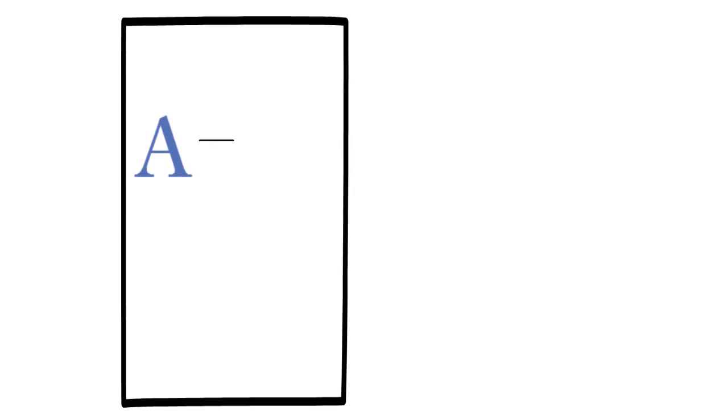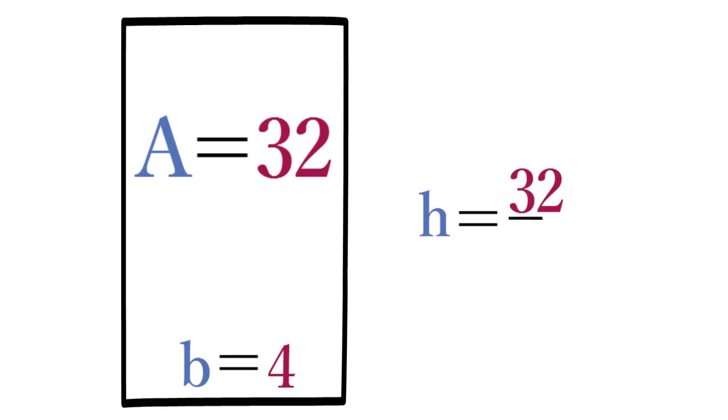Similarly, in this case, the rectangle has an area of 32 and a base of 4. To find the height, divide 32 by 4, which equals 8.